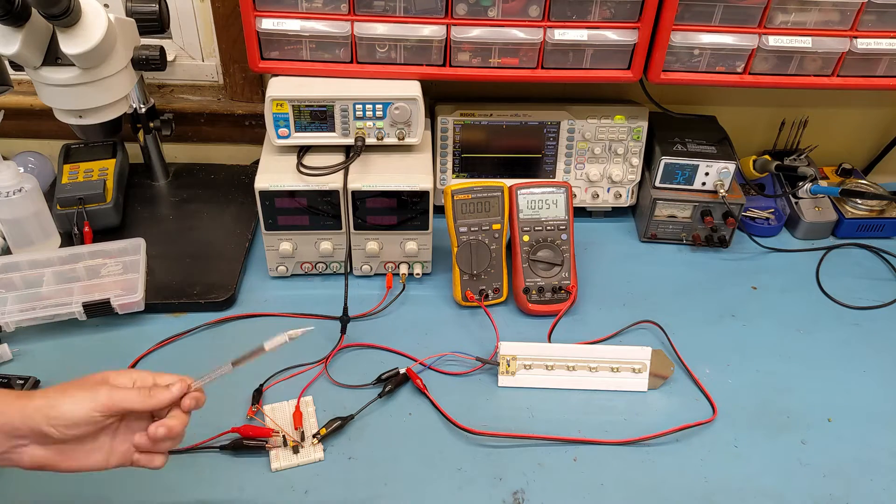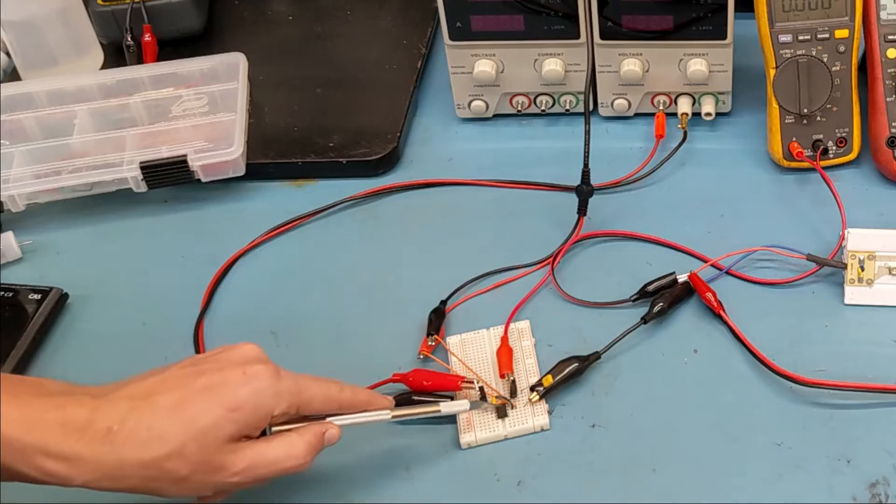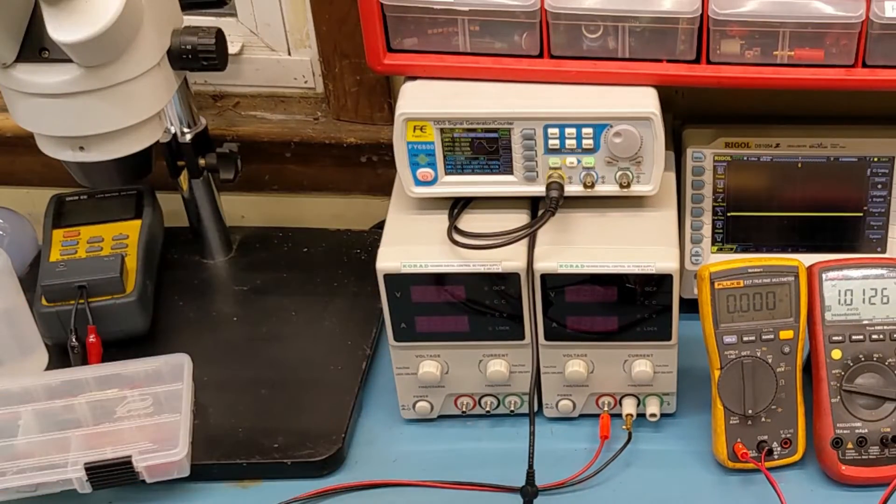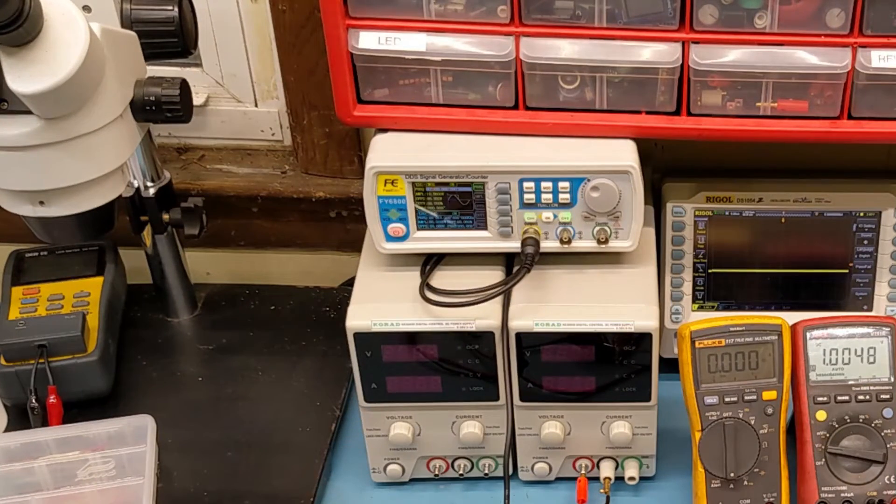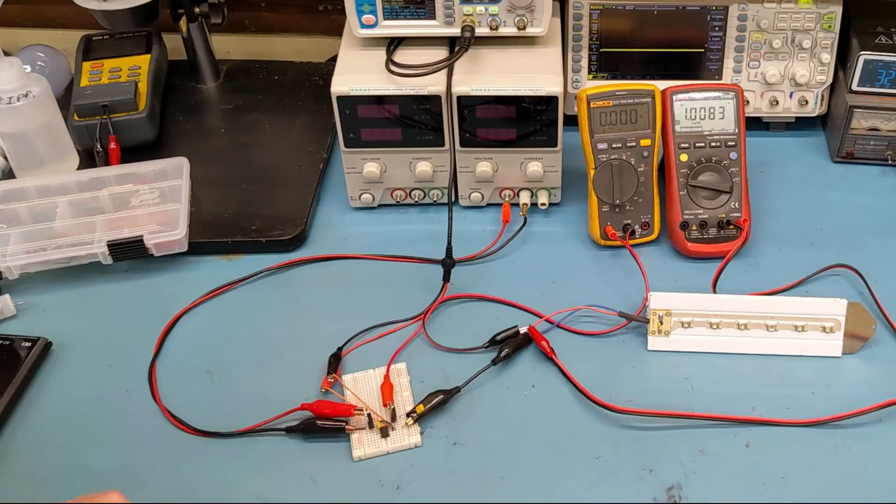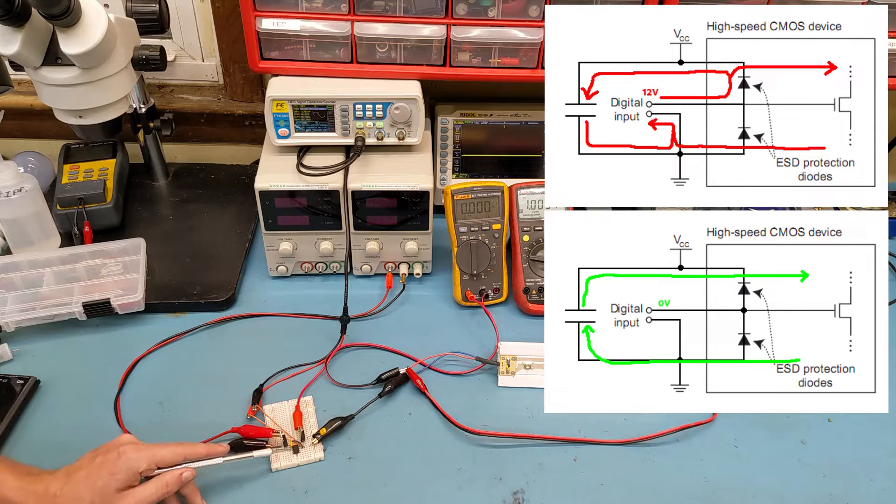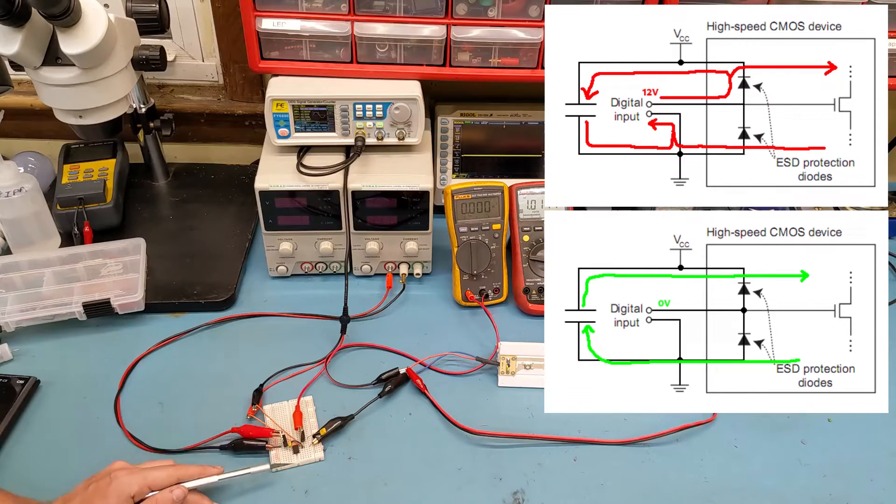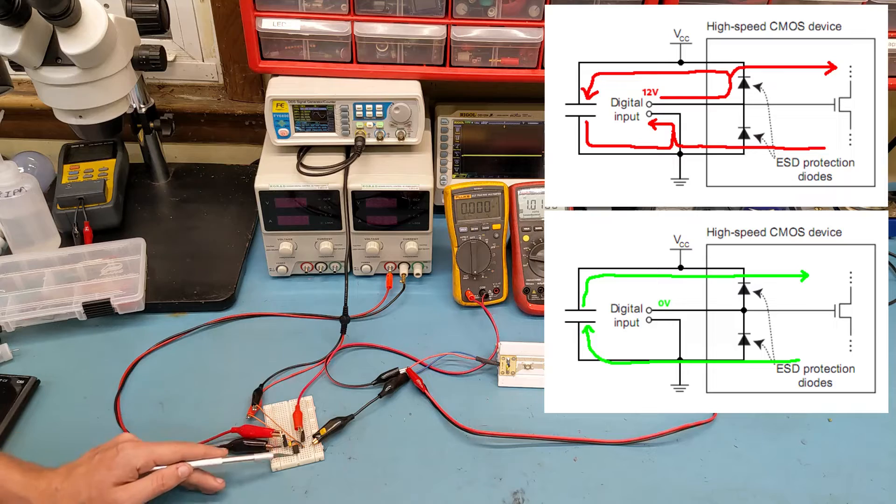Well, at least not powered conventionally. So this gate driver IC actually derives its power from the function generator. When the function generator applies a 10-volt signal to the input of this device, the DC portion of that current is going to conduct through the internal ESD diodes inside of this CMOS chip and charge up the decoupling capacitor for the chip. And this supplies the chip with enough current for the full 360-degree cycle.